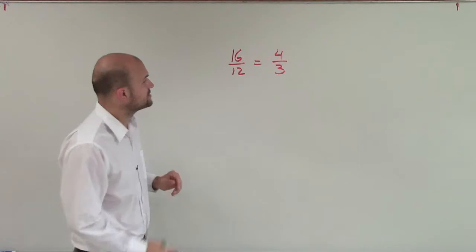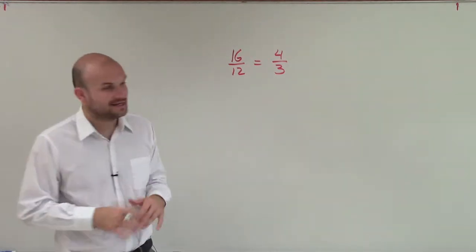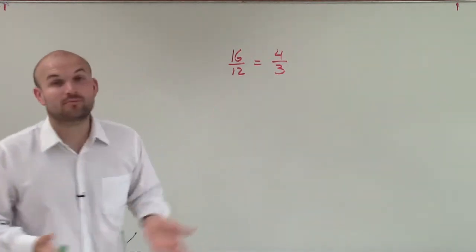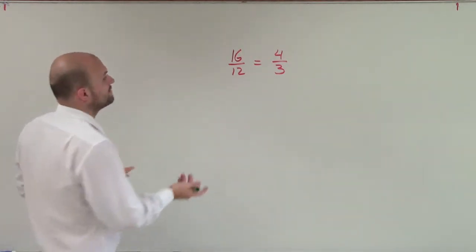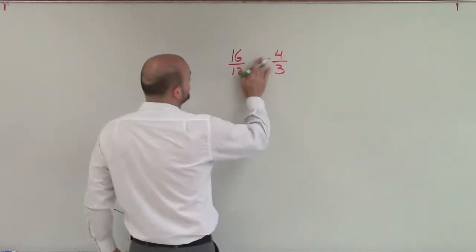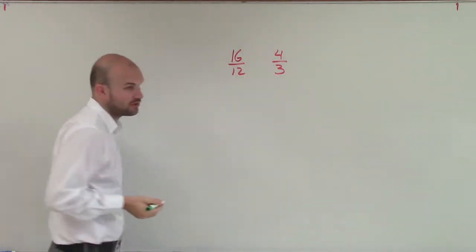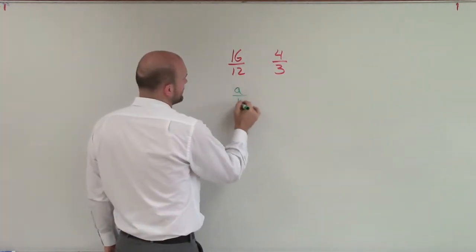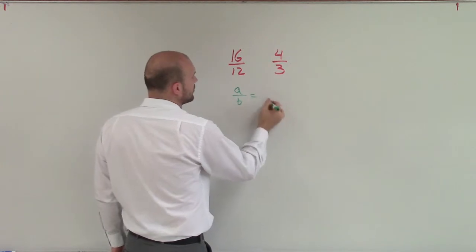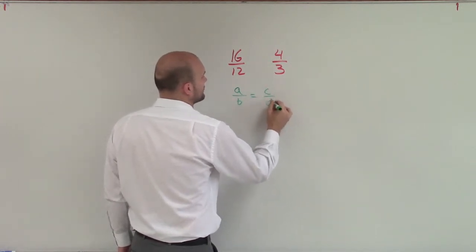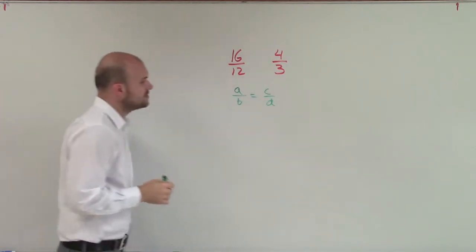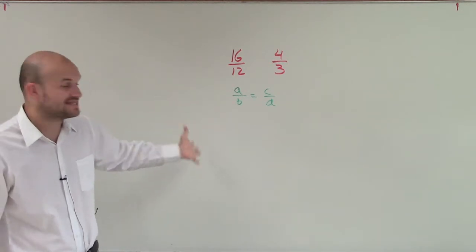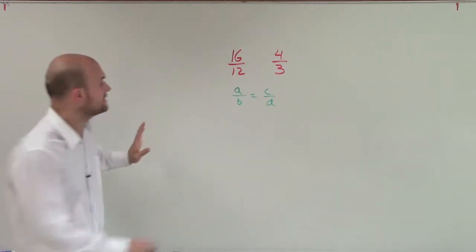Welcome. What I'd like to do is determine if 16 over 12 is a proportion with 4 over 3, or if these create a proportion. A proportion is a fraction equal to another fraction. So what we want to do is say, would A over B equal the exact same thing as C over D?